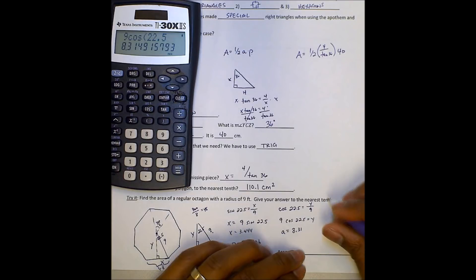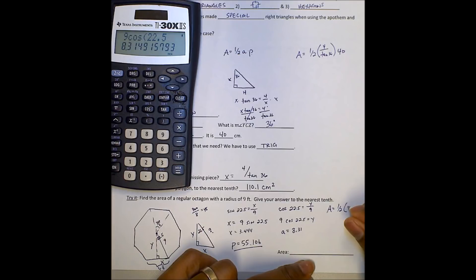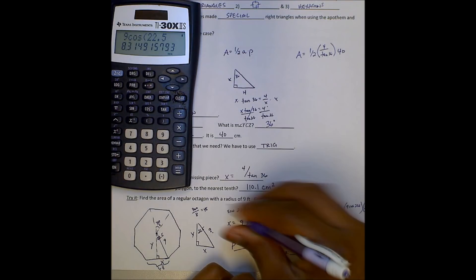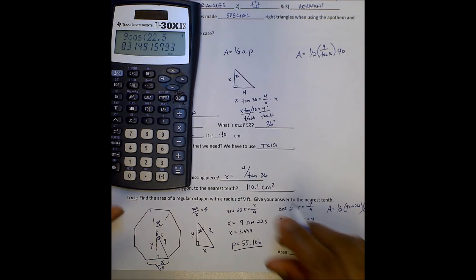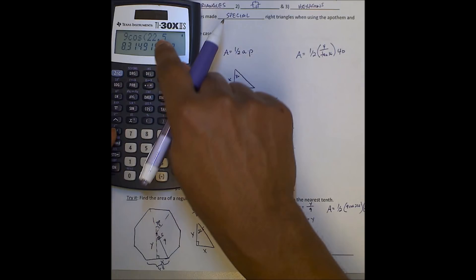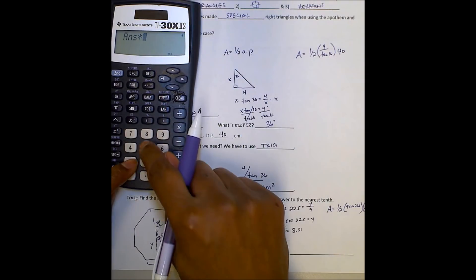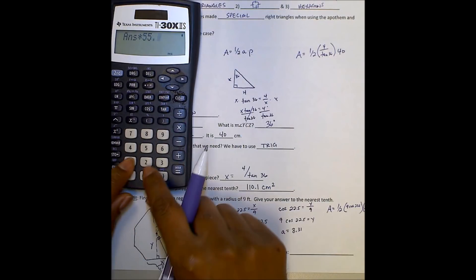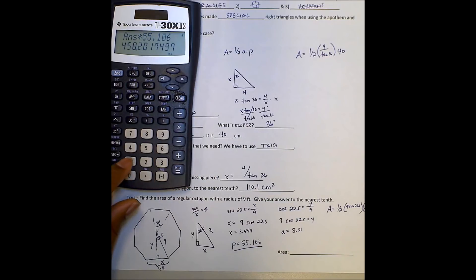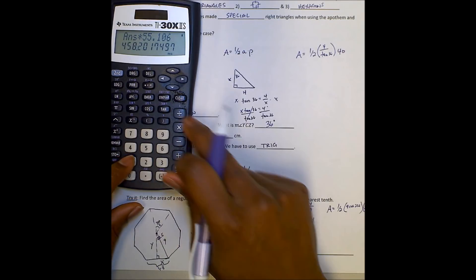So my formula then will be area will equal 1 half the apothem. I'll just write 9 cosine 22.5 here. Times the perimeter, which is 55.106. Sorry, I ran out of space. But I'm going to use that whole thing in here. So in my calculator, I have the apothem times the perimeter divided by 2, or times 1 half.